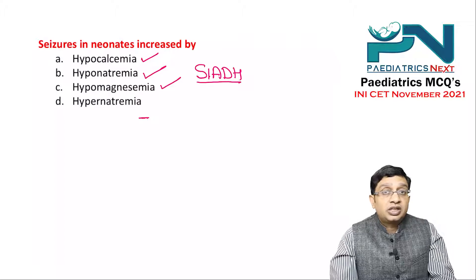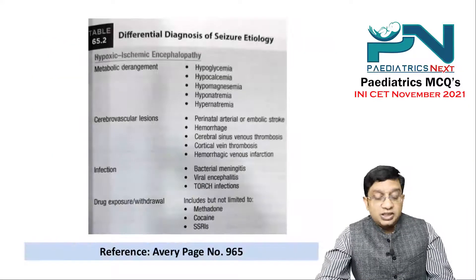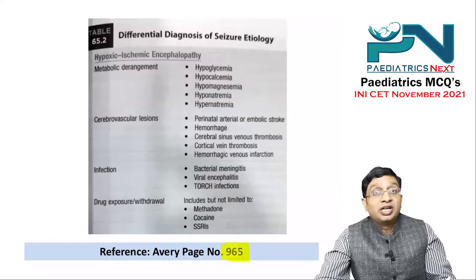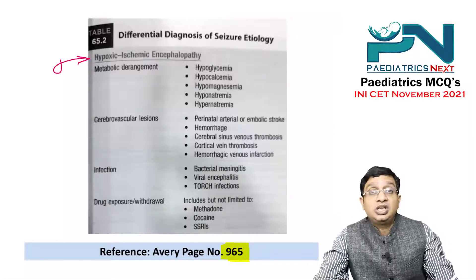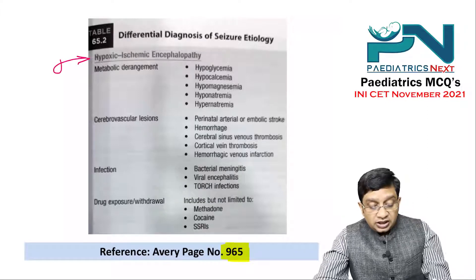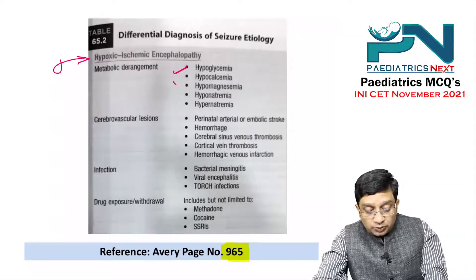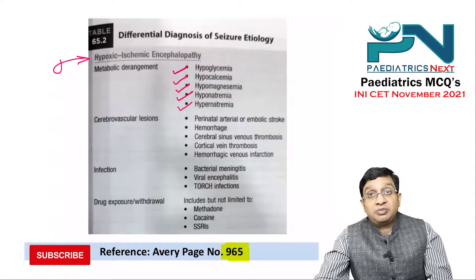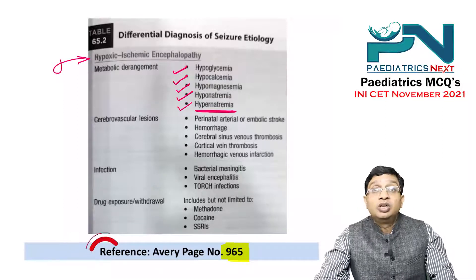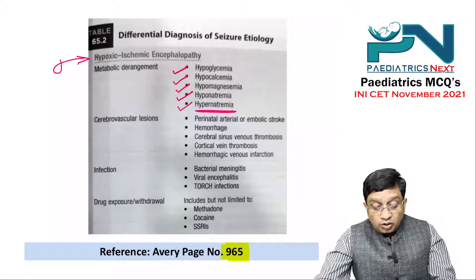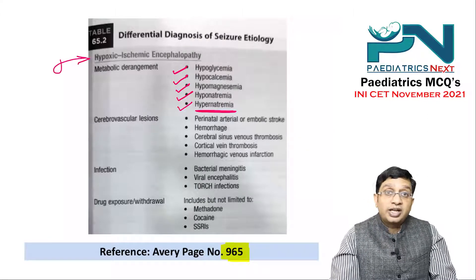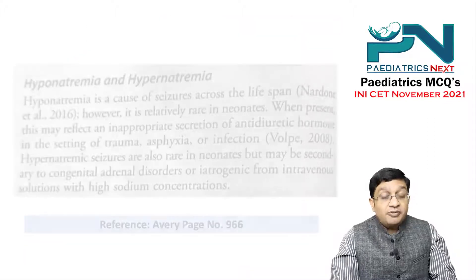I have taken the reference from the textbook of Avery — a neonatal textbook. The reference page number is 965. It states what the causes of neonatal seizure are: the most common overall is hypoxic-ischemic encephalopathy, then hypoglycemia, hypocalcemia, hypomagnesemia, hyponatremia, and hypernatremia. So hypernatremia is also one of the causes of neonatal seizures. If this was a multiple-answer question, all four choices they asked were correct answers.